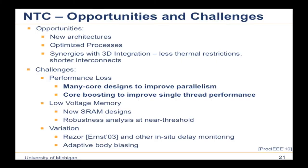A final challenge is dealing with variation. As supply voltage lowers toward the threshold voltage, you must accommodate more variation. In a traditional system with a large gap between supply and threshold voltage, ripples in supply voltage or random dopant fluctuations don't significantly affect timing. But at near threshold, that gap shrinks considerably and variation has a larger impact. Techniques to address this include Razor — designed at Michigan — adaptive body biasing to adjust transistor threshold voltage, and voltage margining.